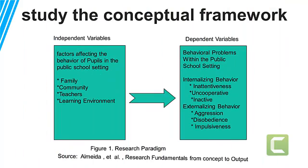Study the conceptual framework given below. From the given example, the conceptual framework utilizes the independent-dependent model used in behavioral sciences. The identified independent variables are factors affecting the behavior of pupils in the public school setting: family, community, teachers, and learning environment. The dependent variables include behavioral problems within the public school setting — internalizing behavior, inattentiveness, uncooperative and inactive — and externalizing behavior: aggression, disobedience, and impulsiveness.